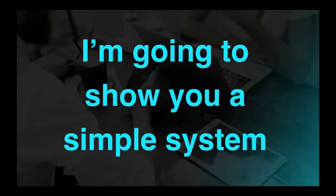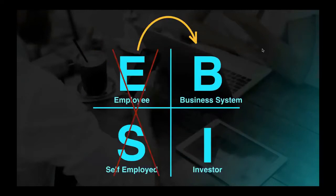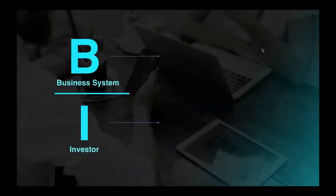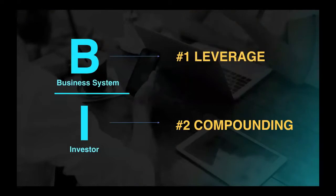I'm going to show you a simple system that's really easy to understand and incredibly easy to use that moves you from the left side of the quadrant to the right side where wealth gets created. It's out of the business system or B quadrant where you leverage, where you're able to generate income and residual income ongoingly through the principle of leverage. It's through the investor quadrant or the I quadrant that allows you to use compounding, the other wealth building principle that our system allows you to plug into.